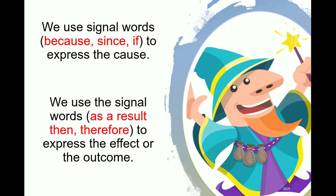We use signal words 'because,' 'since,' and 'if' to express the cause. For the effect or outcome, we use the signal words 'as a result,' 'then,' and 'therefore' to express the effect or outcome.